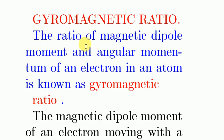The ratio of magnetic dipole moment and angular momentum of an electron in an atom is known as gyromagnetic ratio. This is the definition of gyromagnetic ratio — it is a ratio of magnetic dipole moment to angular momentum.